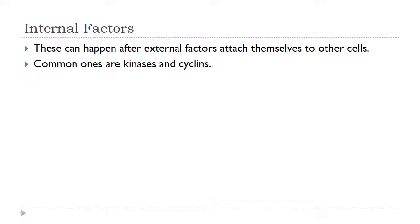Sometimes there are internal factors that change how a cell acts. A lot of the times those are called kinases and cyclins. I assigned you guys a video from Bozeman Science — Paul Anderson describes exactly what kinases and cyclins are, so I recommend you watch it. Basically these are proteins that, once they build up over time inside a cell, trigger the response for the cell to start going through the stages of mitosis. Without those proteins, nothing will actually function.